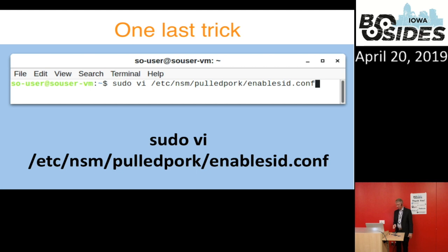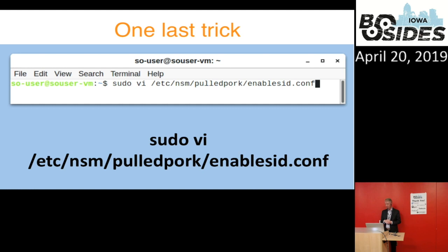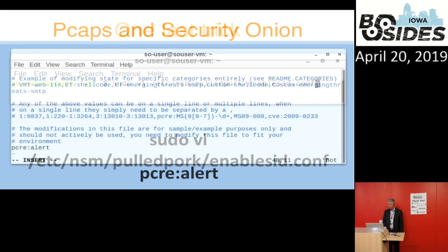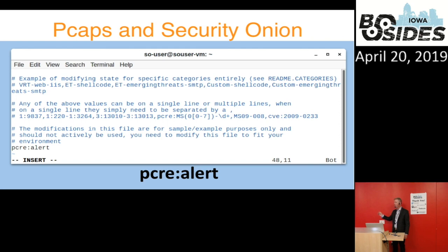One last trick in Security Onion: you can enable the pulled pork configuration file. Pulled pork is the program used to update rule sets for Snort or Suricata. Since I'm playing back PCAPs and want to see every possible alert, I go into that config and add 'pcre:alert' at the very end to enable all signature IDs that show as alerts, even if disabled by default. You'll get a lot more alerts, and it can be noisy.